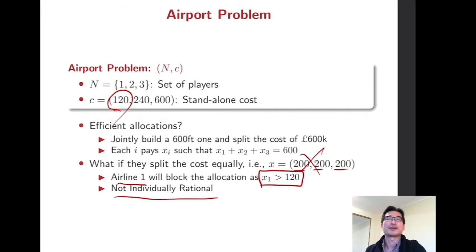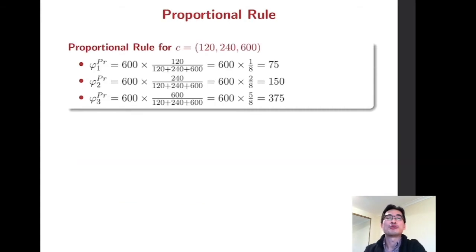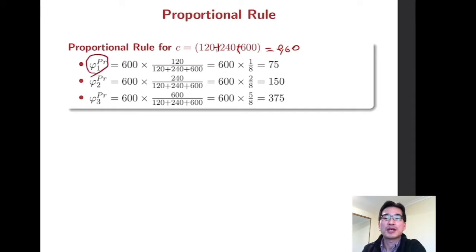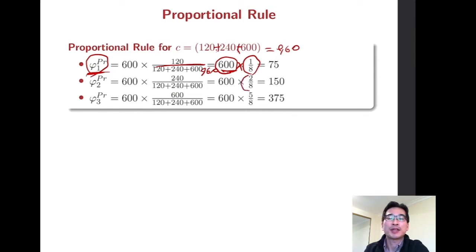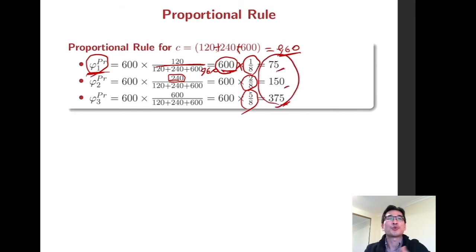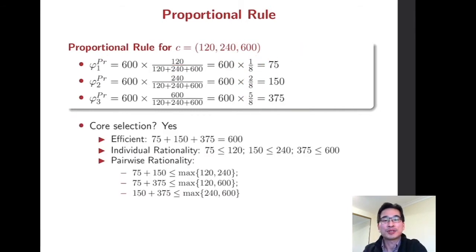Many of you may think the proportional rule might be good. The sum of stand-alone costs is 960. So the smallest airline company pays 120 divided by 960, which is one-eighth of 600. The second company pays two-eighths, proportional to the sum of individual costs. And the largest one pays five-eighths. This is the payment based on the proportional rule.